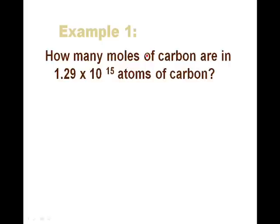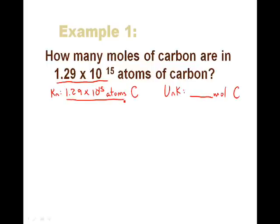So here's an example problem we're going to use. How many moles of carbon are in this many atoms of carbon? So the thing we know here is the number of atoms, 1.29 times 10 to the 15 atoms of carbon, and the unknown, the thing we want to find here at the end of our problem, is how many moles of carbon is this? And then eventually we would be able to turn this into grams and tell you how many grams of carbon there were with this many atoms. But for this problem, this is what we're going to do. So let's just start here: 1.29 times 10 to the 15 atoms of carbon.